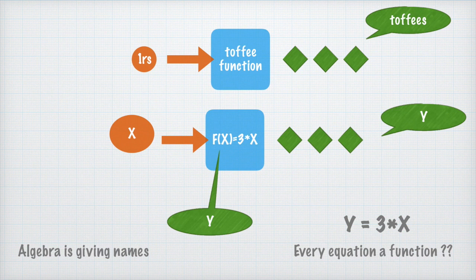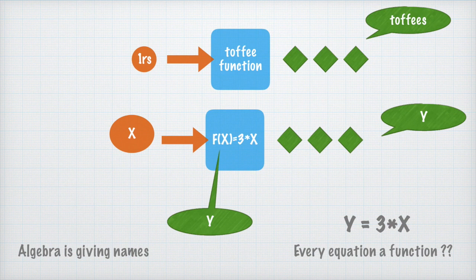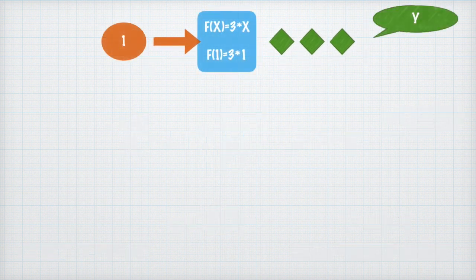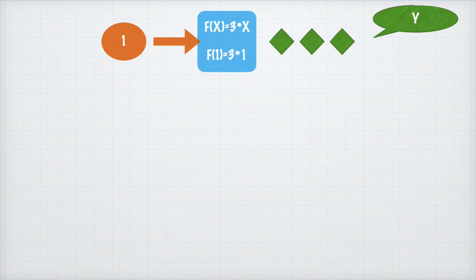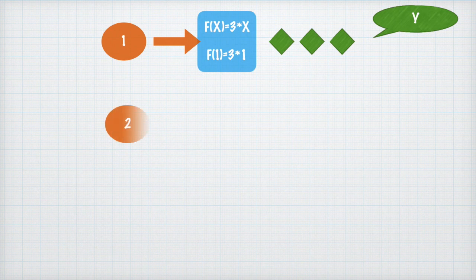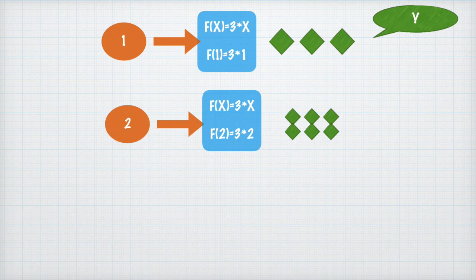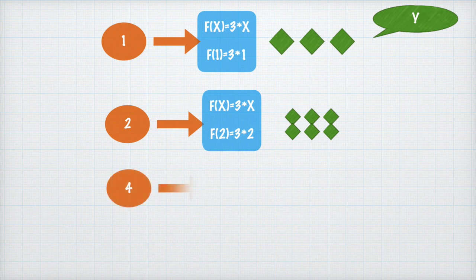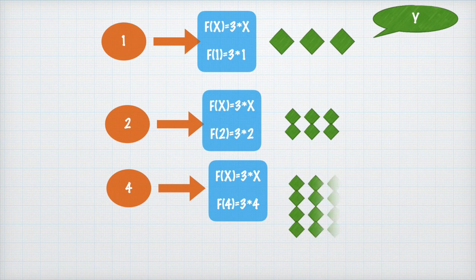Let's use this toffee function. If I put in 1, so if I use the function mathematically, the value of x that I put into f(x) is 1, so I will rewrite it as f(1) = 3 × 1 = 3. Quickly, if I want to find f(2), instead of x I'll write 2 wherever there is x written, and 3 × 2 gives me 6. What if the input is 4? 3 × 4, my answer is 12. Very easy stuff.